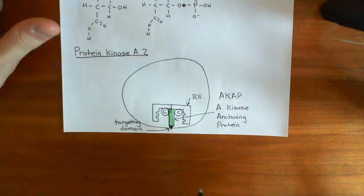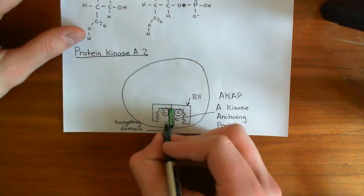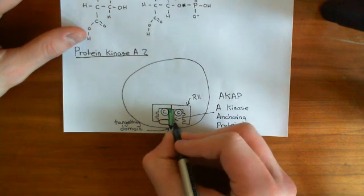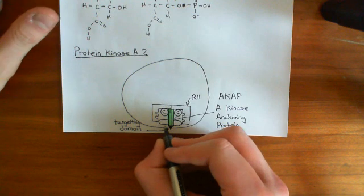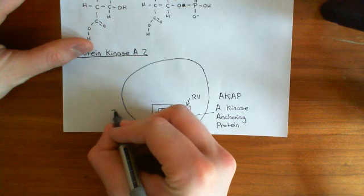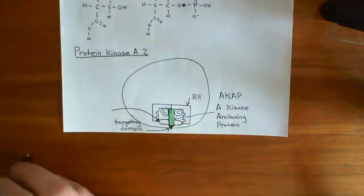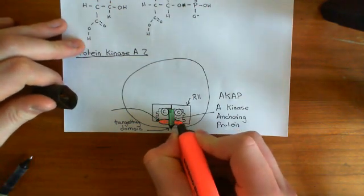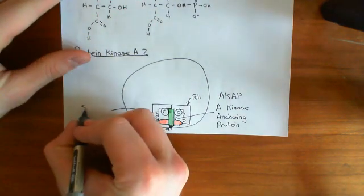Another important thing is that you will also have bound to the AKAP, potentially, a substrate for the catalytic subunit. So these pink proteins here might be substrates for the catalytic subunit of the Protein Kinase A.